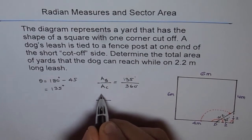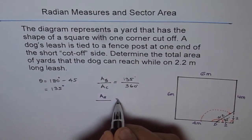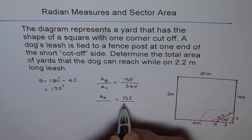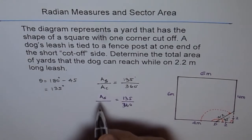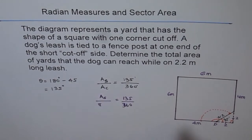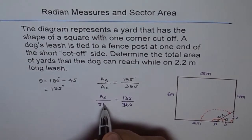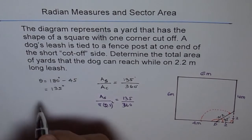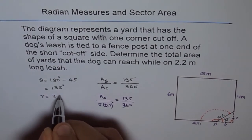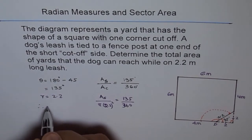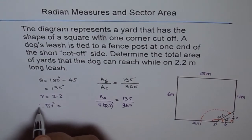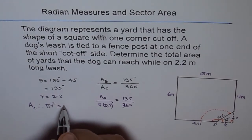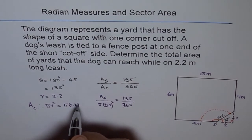So we can write area of sector is equal to 135 over 360, and this is pi r squared, and radius is 2.2. Therefore, pi r squared, which is area of the circle, should be pi times 2.2 squared.